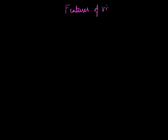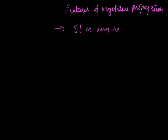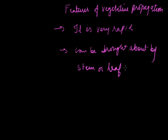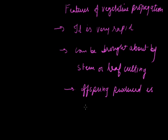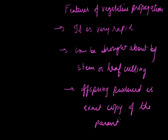Regarding the features of vegetative propagation: first, it is a very rapid process completed in a short period of time. It can be brought about by stem or leaf cutting. The most important significance is that the offspring produced by this method is an exact copy of the parent. This concludes the topic of asexual reproduction in plants.